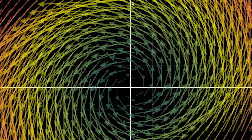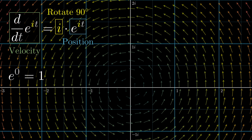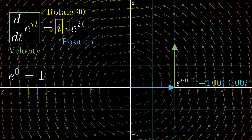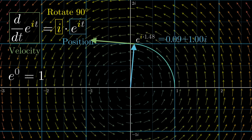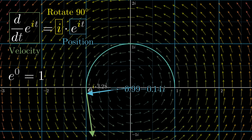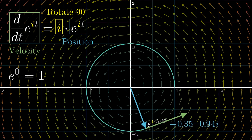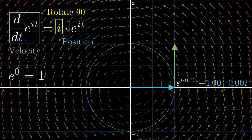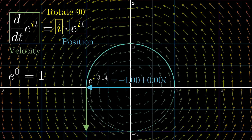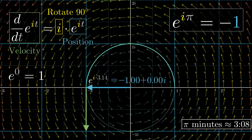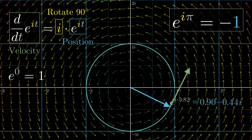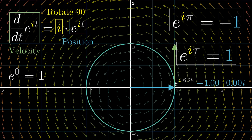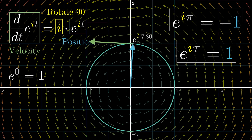Drawing this for all possible positions you might come across, you get a vector field, where as usual with vector fields, you shrink things down to avoid clutter. At time t equals 0, e to the it will be 1 — that's our initial condition — and there's only one trajectory starting from that position where your velocity is always matching the vector that it's passing through: a 90 degree rotation of the position. It's when you go around a circle of radius 1 at a speed of 1 unit per second. So after pi seconds, you've traced a distance of pi around, so e to the i times pi should be negative 1. After tau seconds, you've gone full circle — e to the i times tau equals 1. And more generally, e to the i times t equals a number that's t radians around this unit circle in the complex plane.